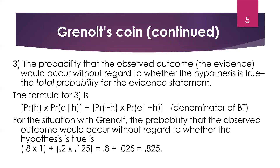So now we just have to do the math. We have 0.8 × 1 = 0.8, and we add that to 0.2 × 0.125 = 0.025. Adding those together, we get 0.825. Now, this isn't Bayes' theorem yet, but it's a crucial part — what we've just done is calculate the denominator for Bayes' theorem.